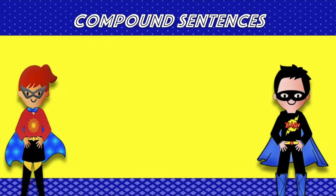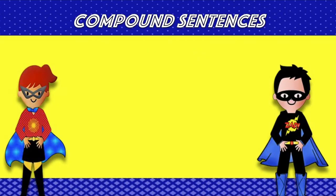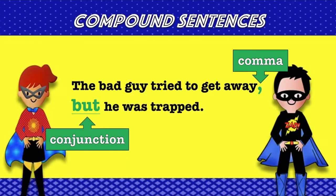Let's try another example. The bad guy tried to get away. He was trapped. We can rewrite the sentences as: The bad guy tried to get away, but he was trapped. We have a comma separating the two clauses and the conjunction that makes this a compound sentence.